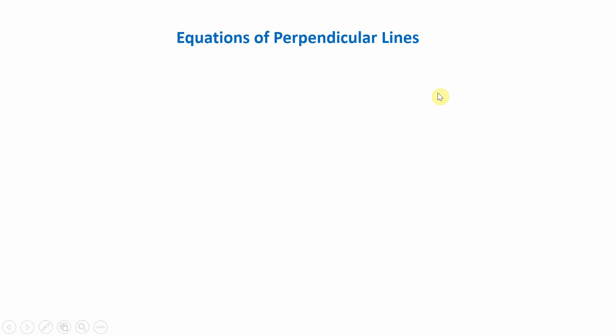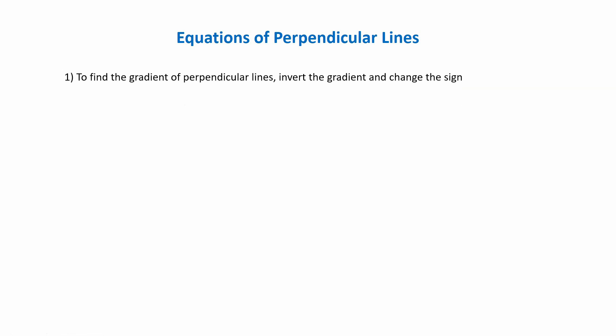Let's have a look at how to create an equation of a line that is perpendicular to another one. To find a gradient of perpendicular lines, invert the gradient and change the sign. Just remember, perpendicular means at right angles.